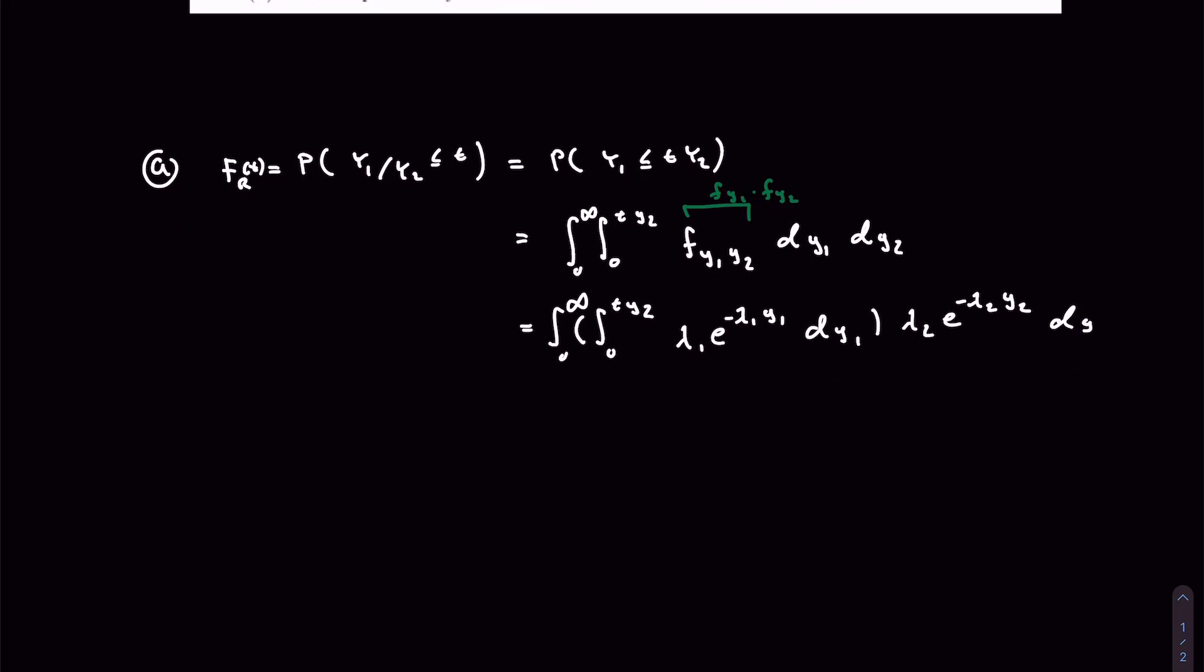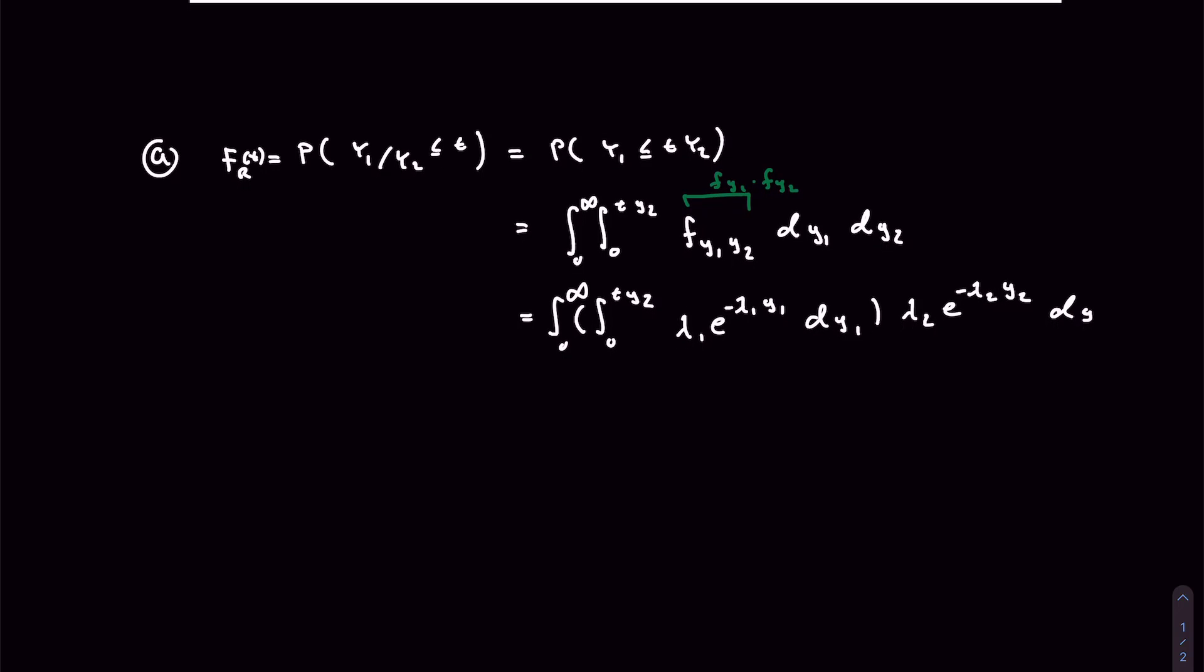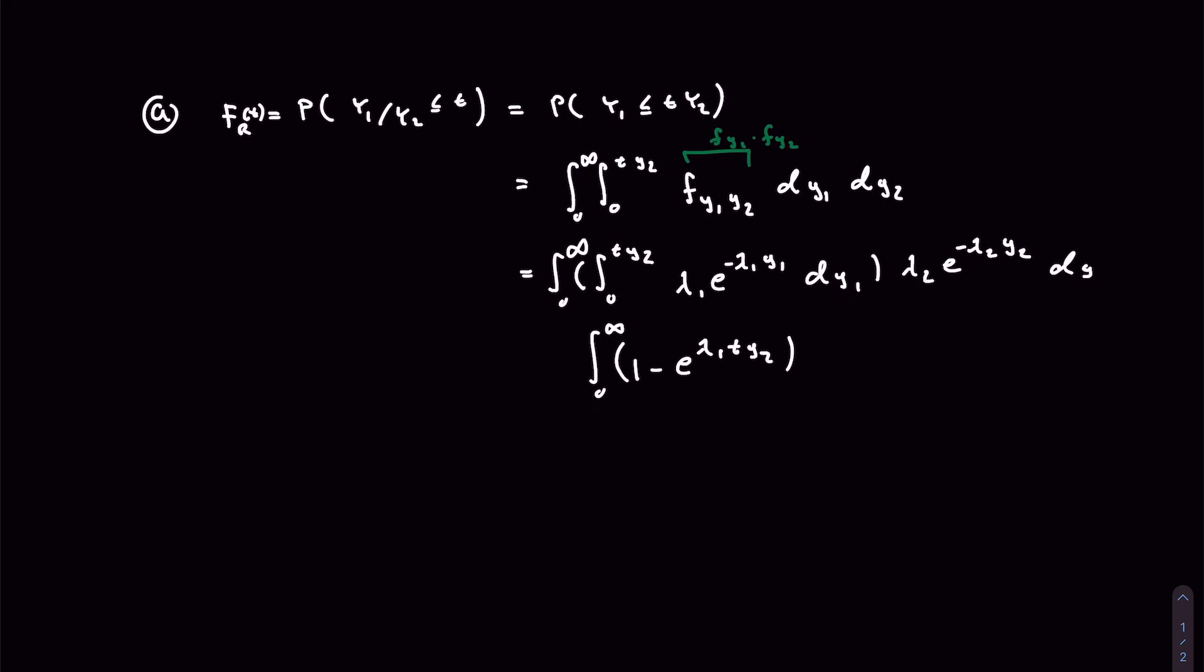of the Y1 random variable, so we can just write it like so. So we write it like 1 minus e to the lambda 1 over T Y2, and the T Y2 comes from the fact that we are evaluating it over this value here. And then we have the remainder, which is lambda 2 exponential negative lambda 2 Y D Y2, there should be 2 there, here, all right,